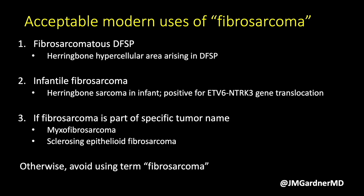Third, if fibrosarcoma is part of a proper specific tumor name — like myxofibrosarcoma or sclerosing epithelial fibrosarcoma — these are not descriptive terms but actual proper names for specific tumor types. Sclerosing epithelial fibrosarcoma is probably on a spectrum closely related to low-grade fibromyxoid sarcoma, and myxofibrosarcoma is more like a myxoid variant of undifferentiated pleomorphic sarcoma. In my opinion, if it's not one of those three things, I basically don't use the term fibrosarcoma — but I'll let you decide whether to take or leave that advice.